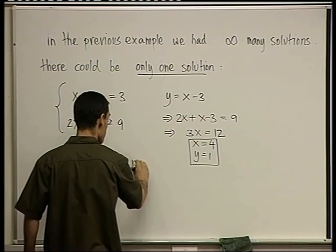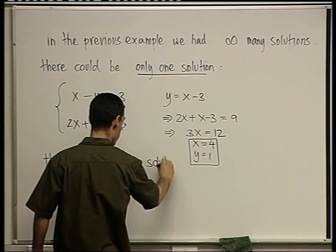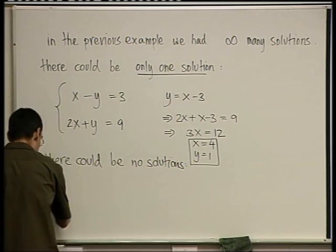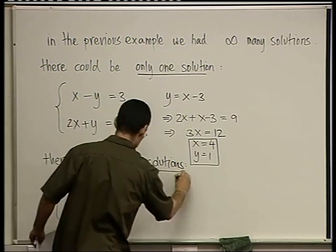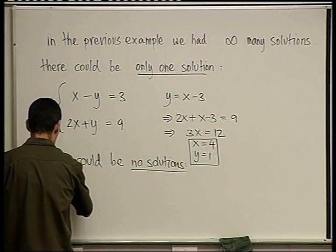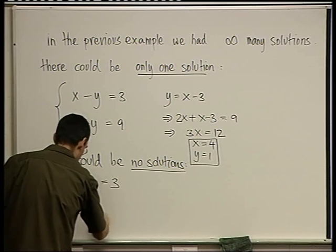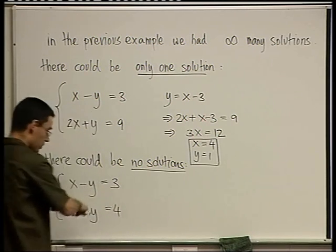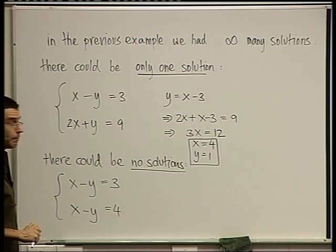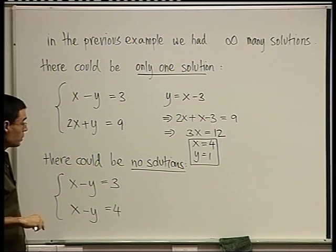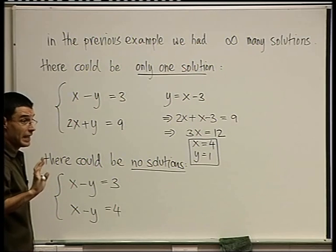No solutions. Here's another example. Look at the system: x minus y equals 3 and x minus y equals 4. This is a very trivial system. Sometimes a system with no solutions could be disguised.